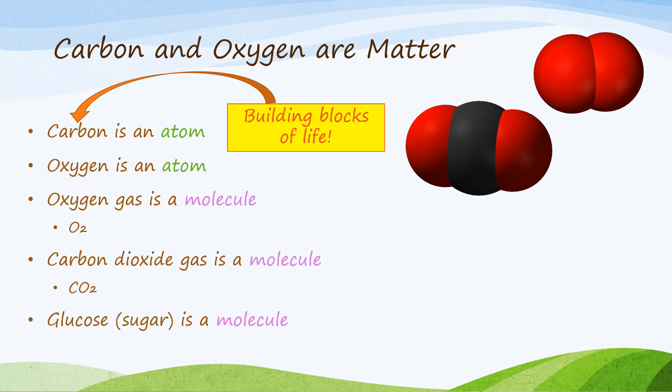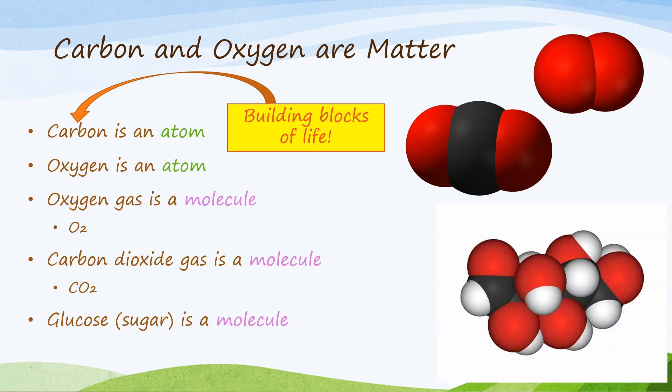Glucose, or sugar, is another molecule that is very important because it is an important energy source for all living things. Glucose is written as C6H12O6 because it is made of six carbon atoms, 12 hydrogen atoms, and six oxygen atoms all bonded together. Understanding these molecules will help us understand the carbon and oxygen cycles and how they are connected.